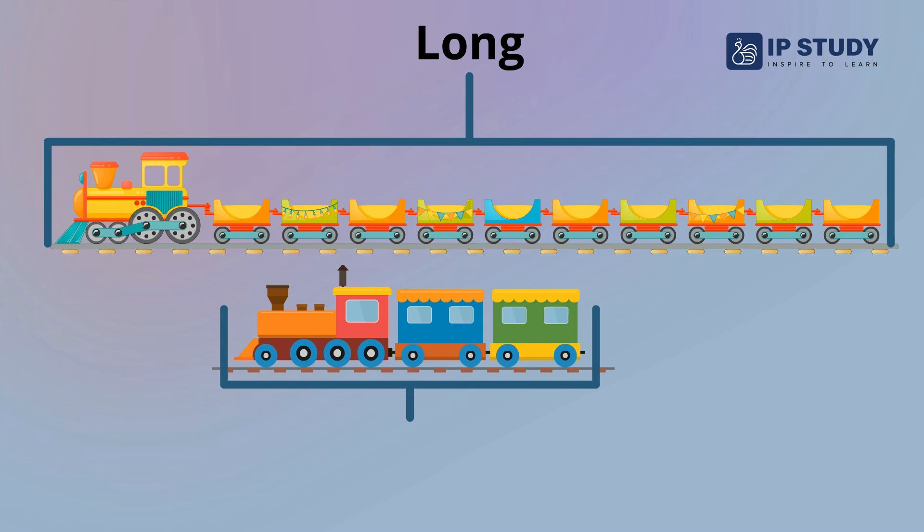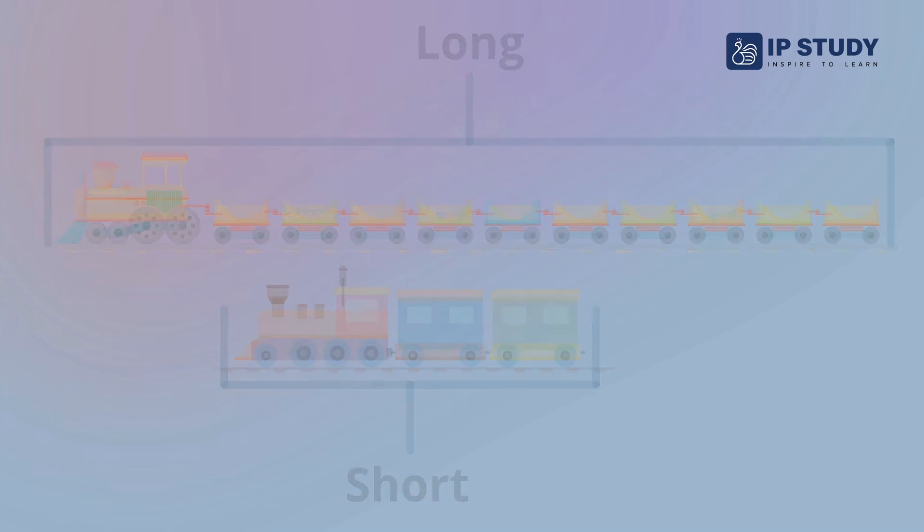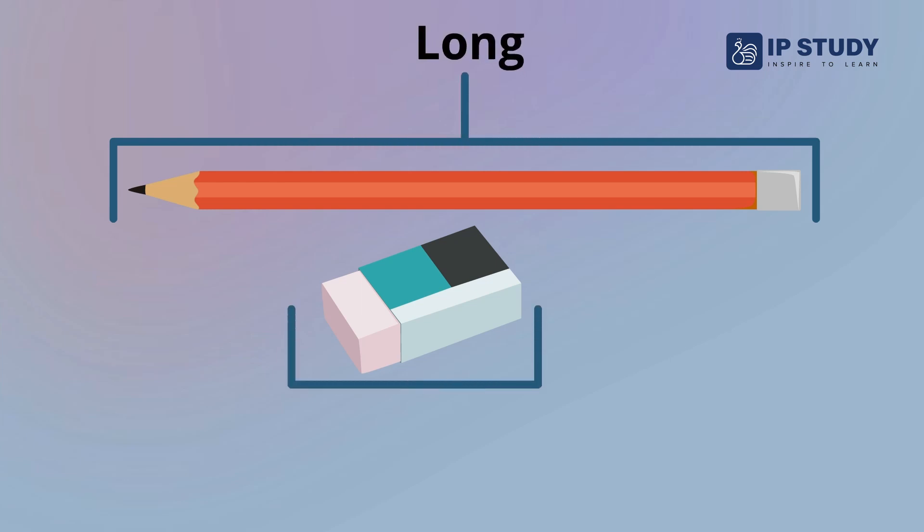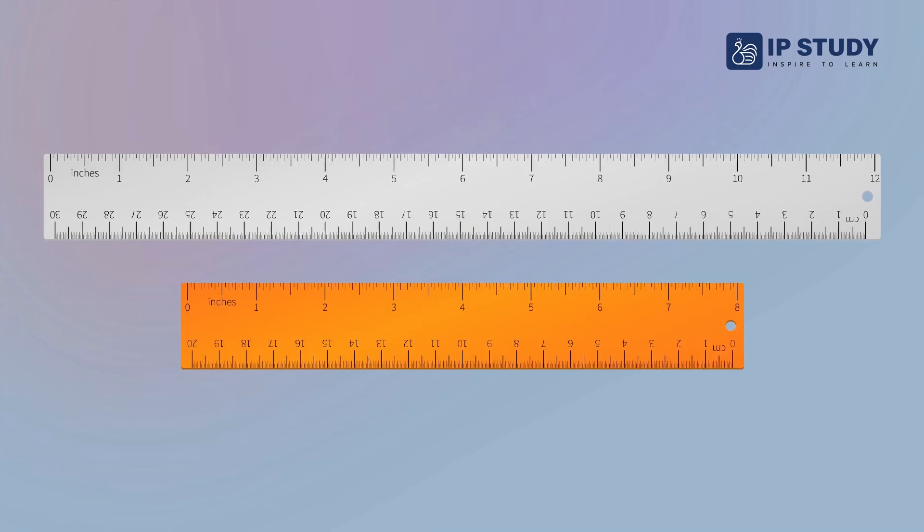This is a long train and this is a short train. Look at this - this is a long pencil and this is a short eraser. Now can you tell me which scale is long and which scale is short?